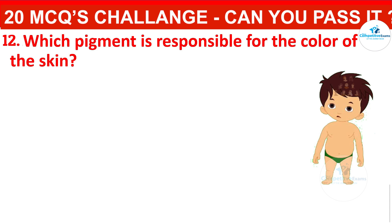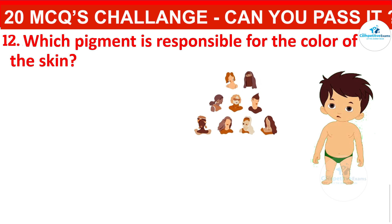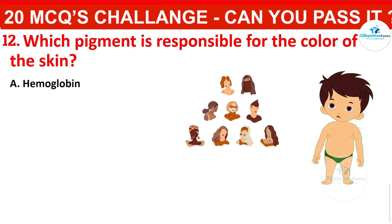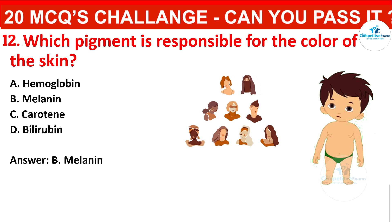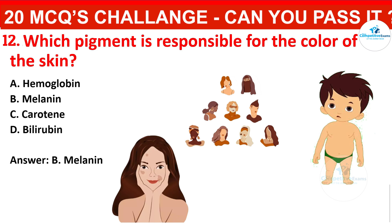Which pigment is responsible for the colour of the skin? Your options are: hemoglobin, melanin, carotin, or bilirubin. The correct answer is melanin. Melanin, produced by melanocytes, determines the skin's colour and protects the skin against harmful UV radiation.